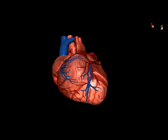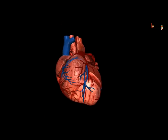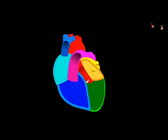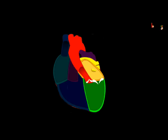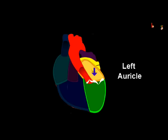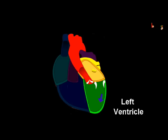Basically, every heart chamber receives the blood and then it contracts, forcing the blood out of it. For example, when atrial muscles are in a relaxed state, the chamber receives blood, and if the chamber shrinks because of muscular contraction, the blood is forced into the ventricle.